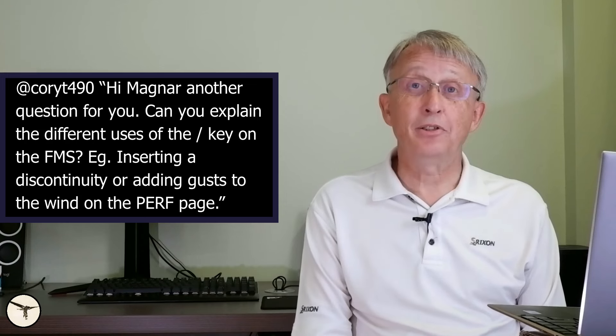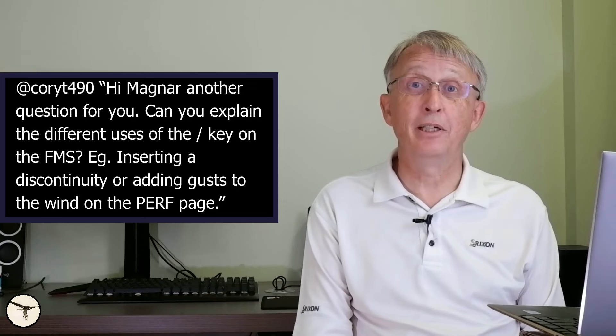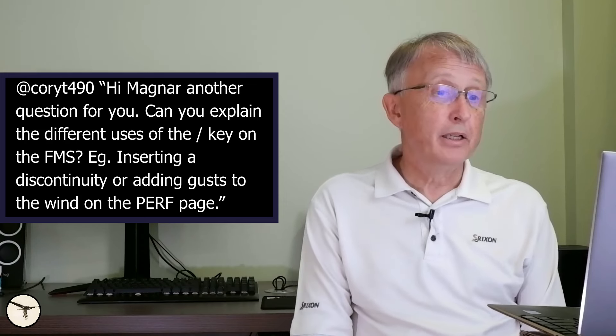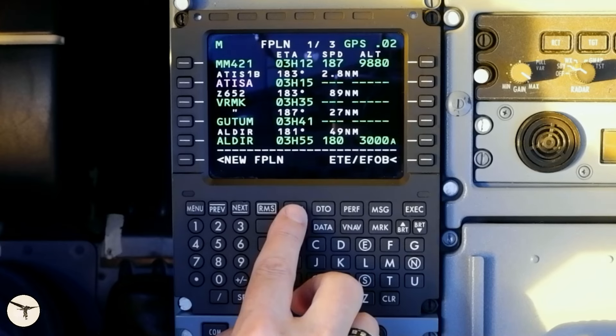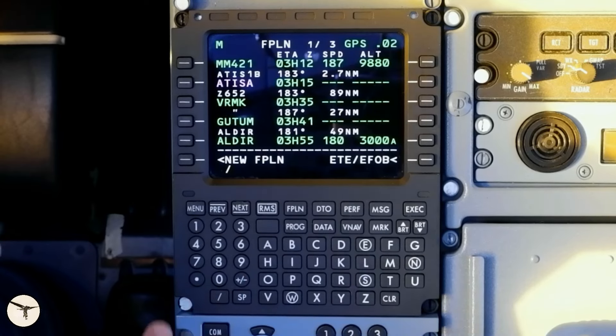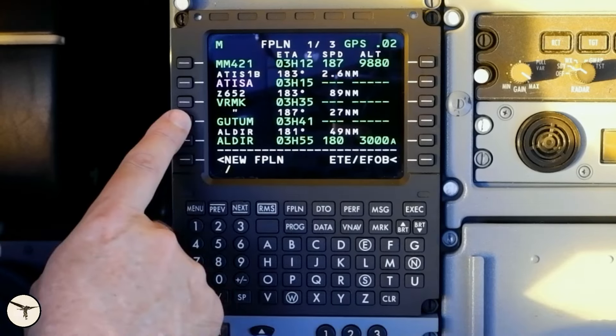So this is the FMS in the ATR particular cockpit. And when you are on the flight plan page and type slash and press the left LSK above a waypoint, you will open a discontinuity in the flight plan. You can use this to insert additional waypoints. There are also lines where you have more than one data point, and they are separated with a slash.